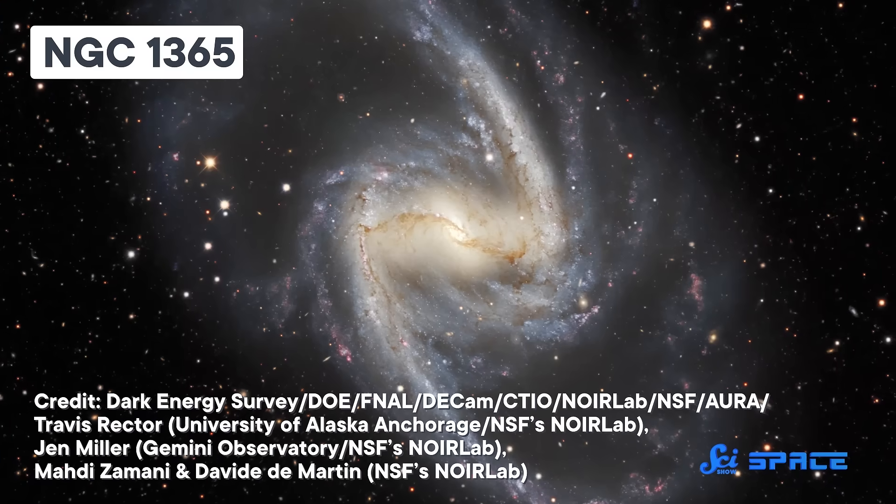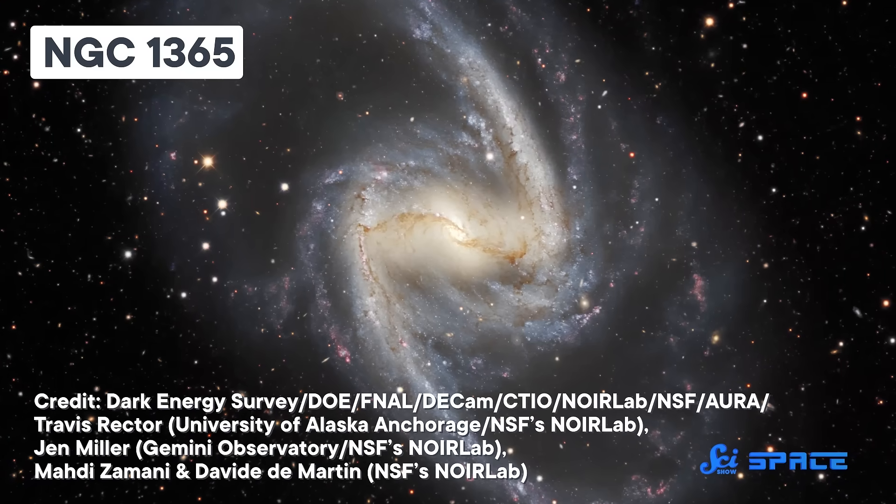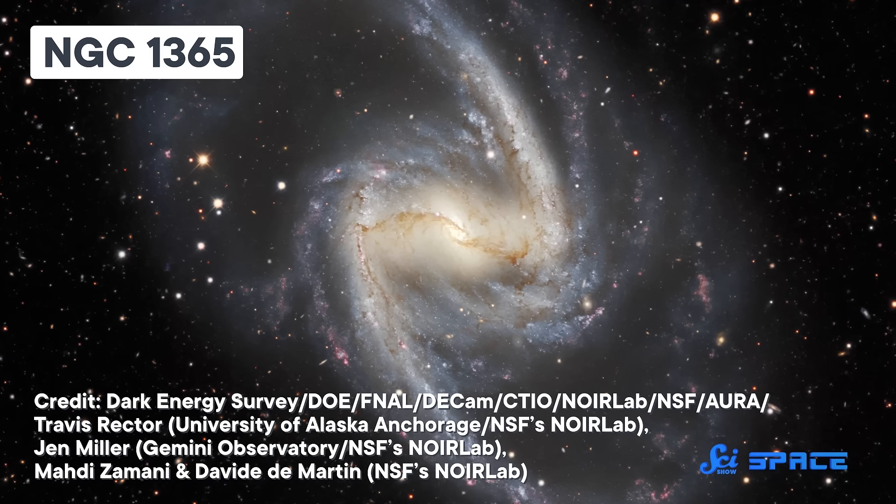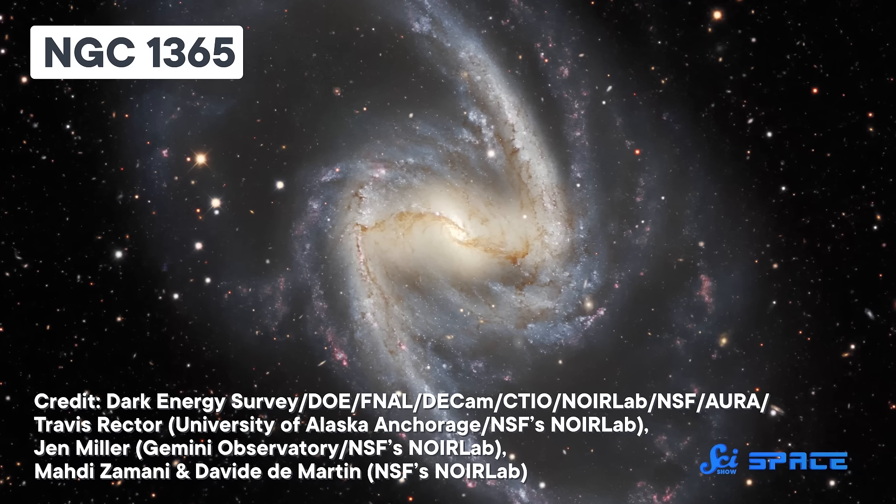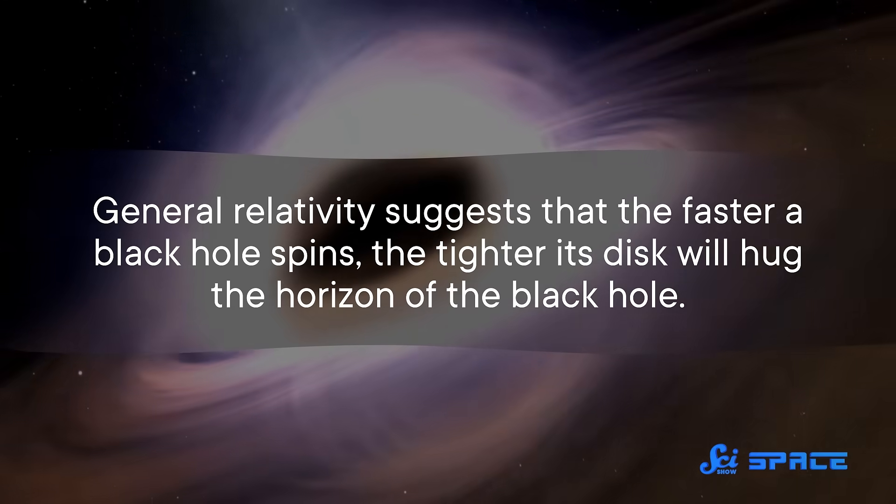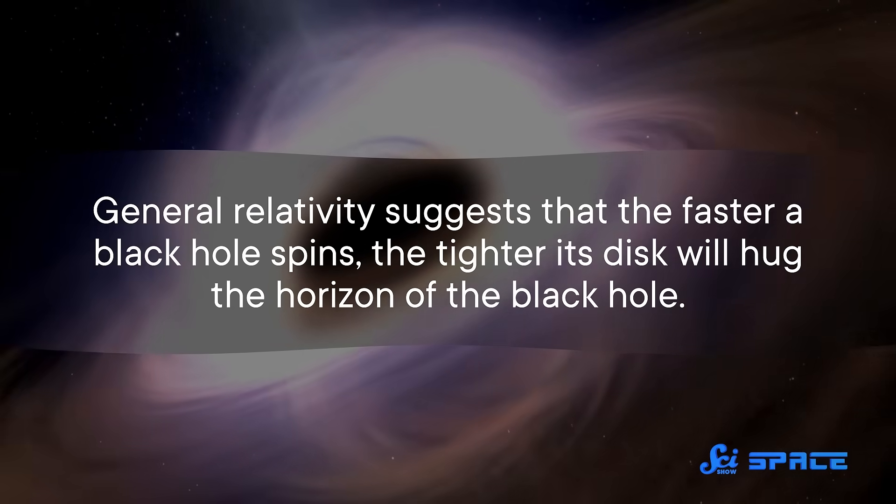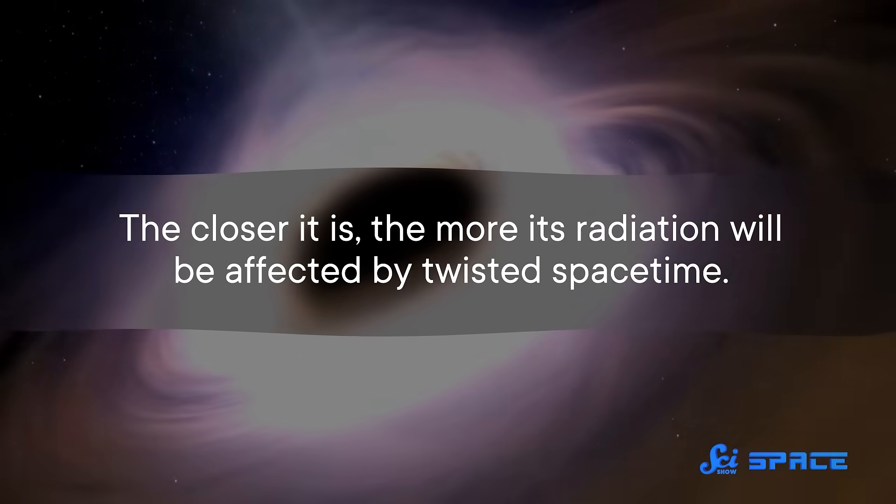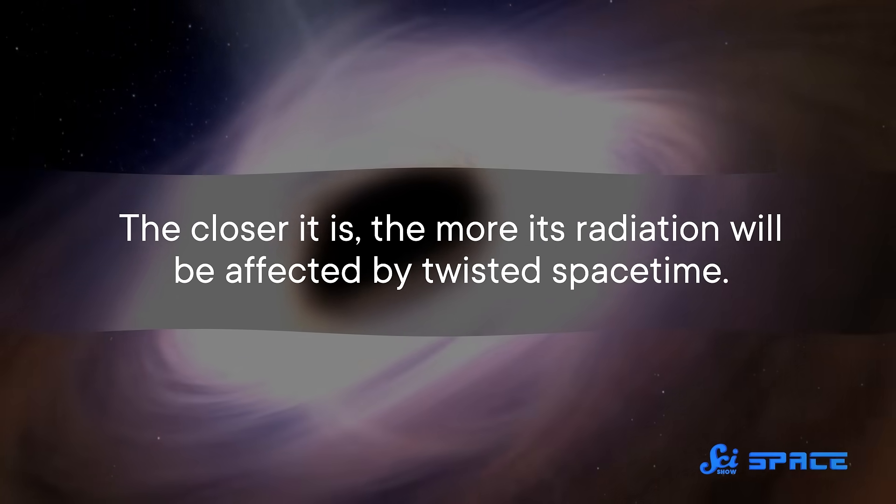In 2012, scientists focused the telescope on the supermassive black hole at the center of a galaxy some 56 million light-years away. They were hoping to use the information in the X-rays radiating from its disk to measure the black hole's spin. General relativity suggests that the faster a black hole spins, the tighter its disk will hug the horizon of the black hole. And the closer it is, the more its radiation will be affected by twisted spacetime.